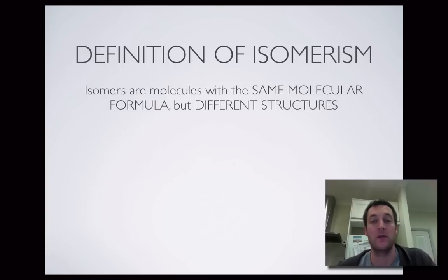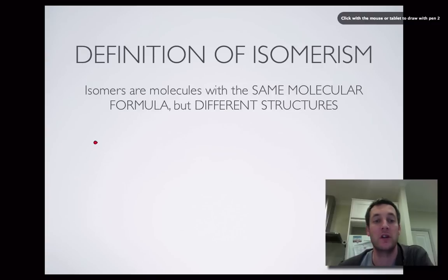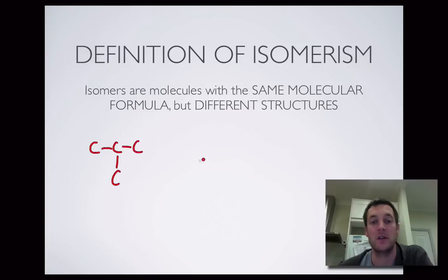Let's start off with a definition. Isomers are two or more molecules that have the same molecular formula but different structures. That might seem a little bit obscure, so let's just draw two molecules that have different structures but the same formula.